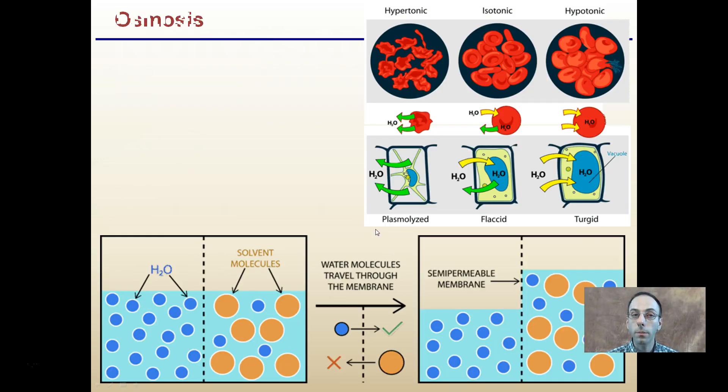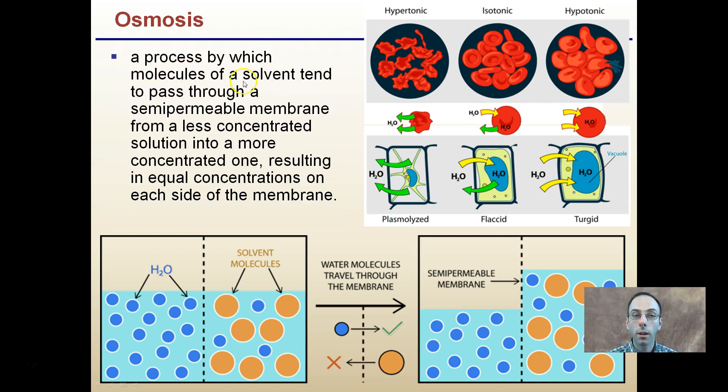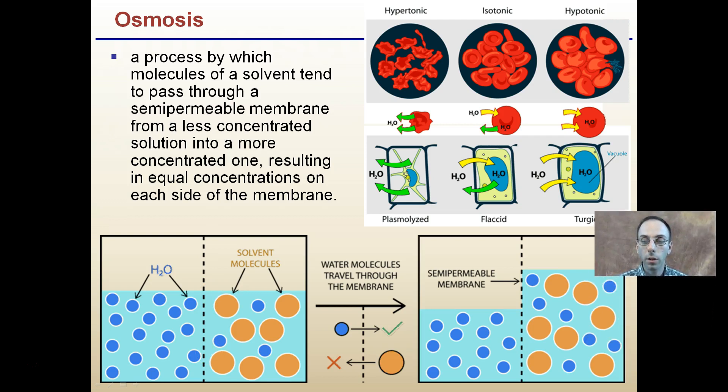Osmosis is a little different. Osmosis is the process by which molecules of the solvent tend to pass through a semipermeable membrane from a less concentrated solution into a more concentrated one, resulting in equal concentrations on both sides of the membrane. We see that here. Here's our water. Here's our solvent molecules. Our solvent molecules can't pass through this semipermeable membrane, but the water can, and that will result in a change in the water height here. Water molecules travel through this membrane, trying to even out on both sides, trying to make even concentrations on both sides.